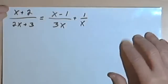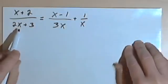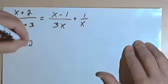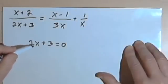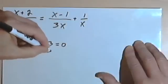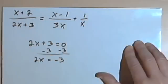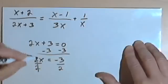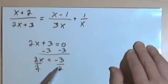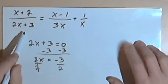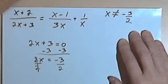The first step is to find the excluded values — the values that x cannot have because they would turn one of the denominators into 0. Looking at that first fraction, it has a denominator of 2x plus 3. Setting that equal to 0 and subtracting 3 from both sides gives 2x equals negative 3, so x equals negative 3 halves. That means x cannot equal negative 3 halves — it's one of my excluded values.